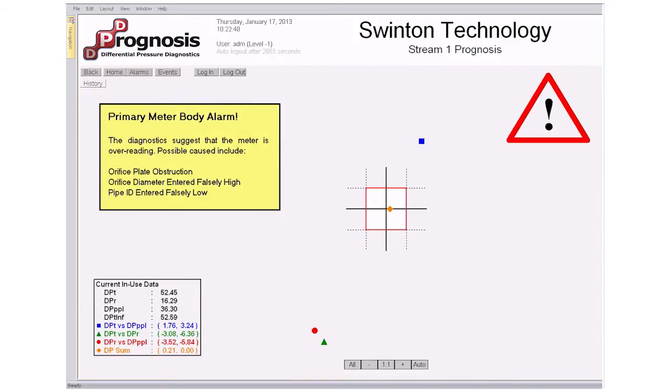In addition, the pattern of the points tells us that there is no issue with the DP measurements but that there is an issue with the meter body itself. What's more, this pattern is indicating that the meter is over-reading. One of the reasons for this would be an obstruction of the orifice hole.